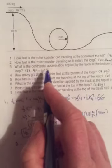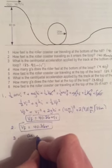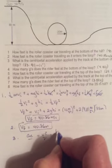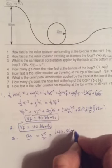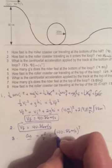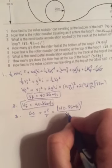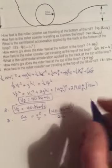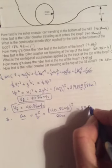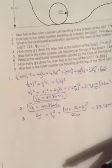Number three. What is the centripetal acceleration applied at this spot? So then you're going to do ac is equal to v squared over r. So 40.86 meters per second, and that gets squared. And the r, it tells us, is 20 meters. And when you do that, you should get 83.48 meters per second squared.